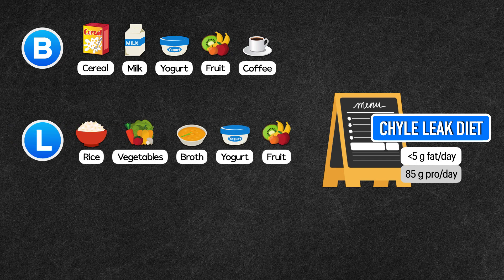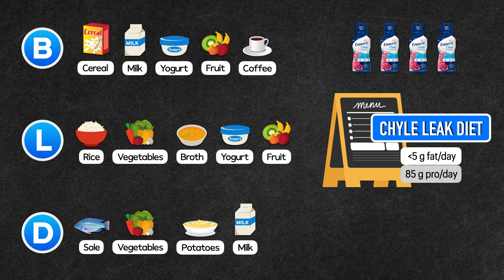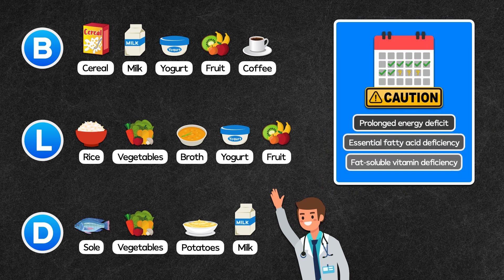Lunch consists of white rice, steamed vegetables, vegetable broth, fat-free yogurt, and fresh fruit. Dinner consists of steamed sole, steamed vegetables, mashed potatoes made with no milk or butter, and skim milk. We also place an order for 4 bottles of Ensure Clear, and these can be consumed at any point during the day. The food selections are limited, but so are the number of days the patient will be expected to be on it. You never want to restrict fat to this degree for greater than 7 to 10 days, because you increase the risk of a prolonged energy deficit, essential fatty acid deficiency, and a fat-soluble vitamin deficiency.